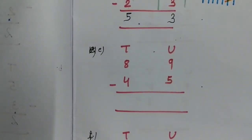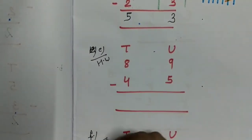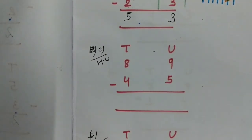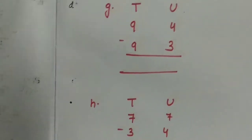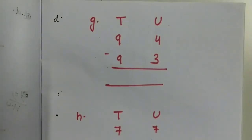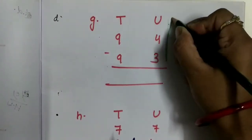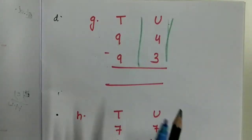Children, mark E as homework and F as homework. You have to draw the line and subtract it. Now come to question number G. Again, here this one will be the units column and this one will be the tens column.